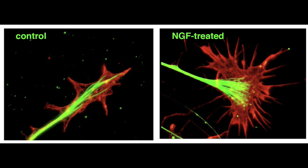When NGF is added globally to the culture medium, as in this picture, widespread actin polymerization spreads the growth cone on the substrate.